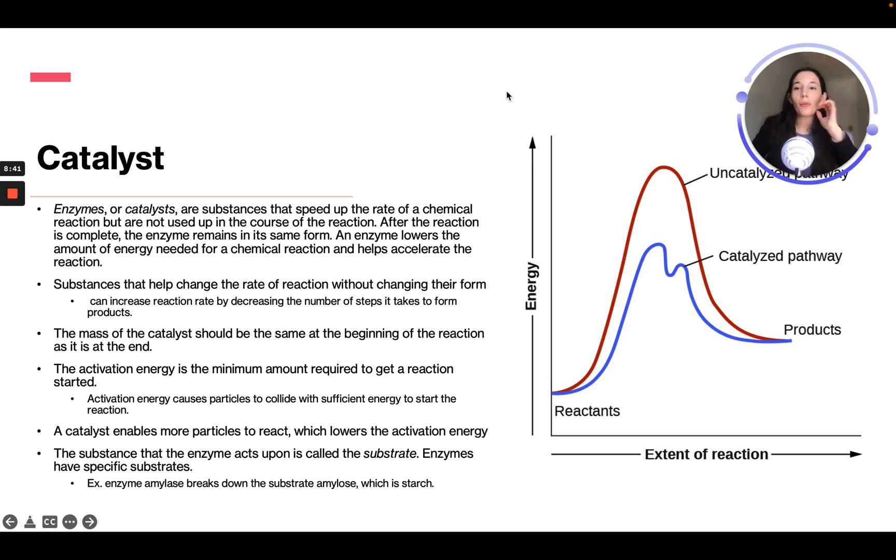Enzymes or catalysts are substances that speed up the rate of a chemical reaction, but they're not used in the course of the reaction. After the reaction is complete, the enzyme remains in the same form. An enzyme lowers the amount of energy needed for a chemical reaction and helps accelerate the reaction.